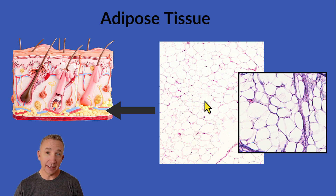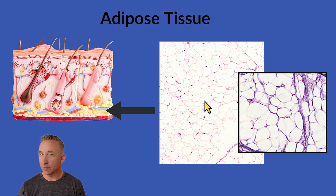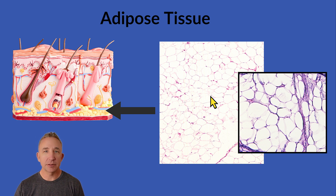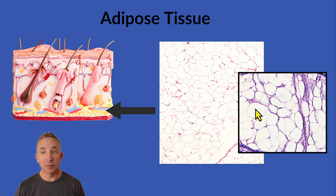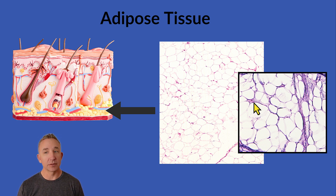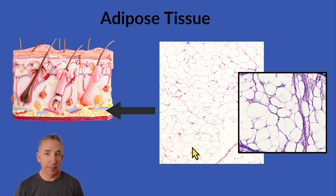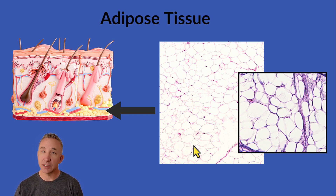Adipocytes shrink in size when we use them, but they don't necessarily go away. They will die off and do have the ability to regenerate, but that's what makes losing weight difficult. Your body's trying to keep them for an energy supply, and if you don't use them, they won't shrivel up and shrink, and then you won't lose that weight. So adipose tissue, seen in the hypodermis, is full of a bunch of adipocytes — a bunch of clear bubbles.